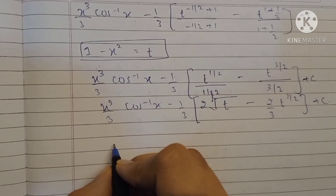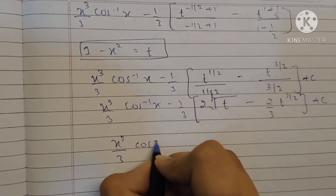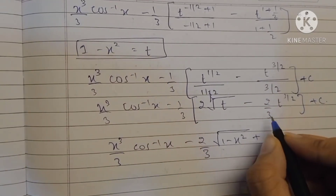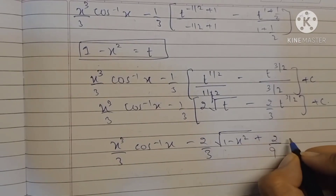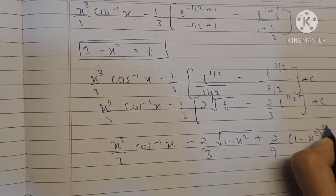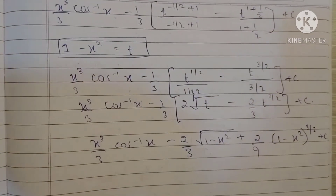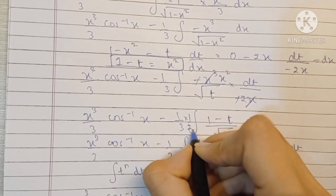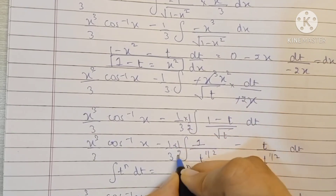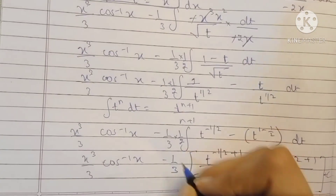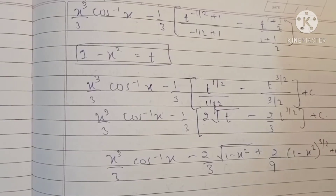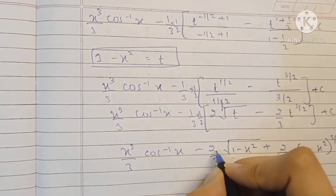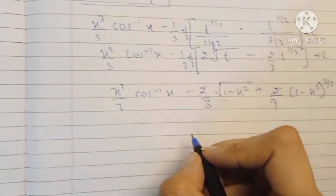Now replacing t with 1 minus x squared: x cubed by 3 cos inverse x minus 2 by 3 root 1 minus x squared, and minus minus becomes plus, giving 2 upon 3 into 3 which is 9 times 1 minus x squared raised to 3 by 2 plus c. We also need to account for the 1 by 3 factor that was taken outside earlier, so multiplying through, the two factors of 2 cancel, and we are left with 1.